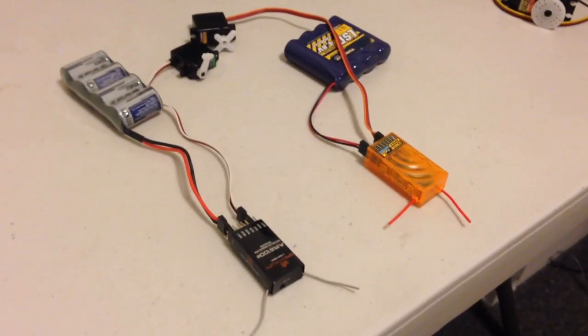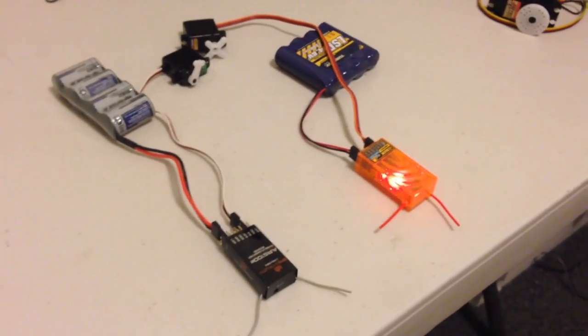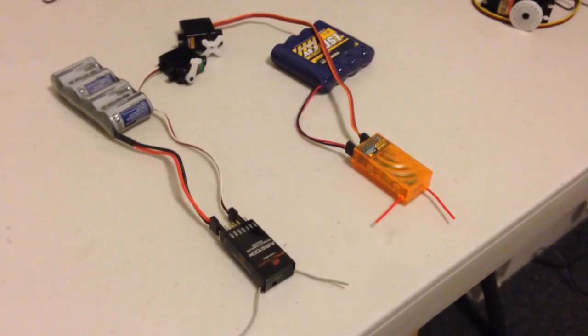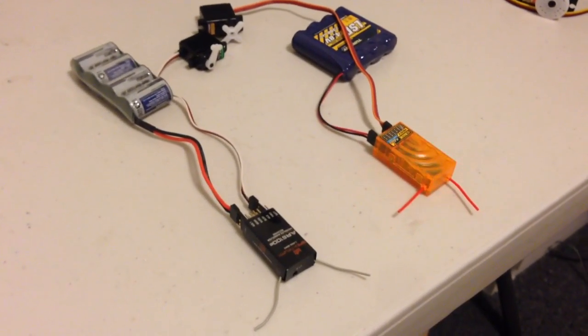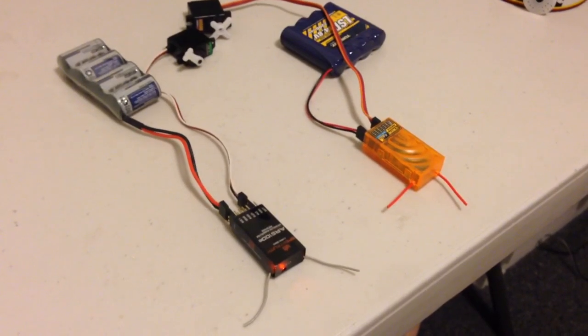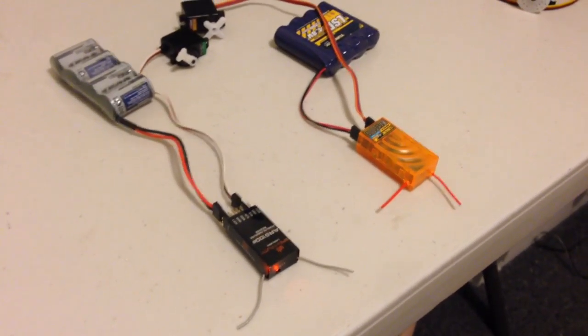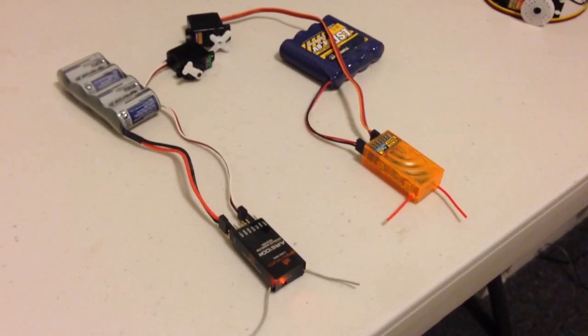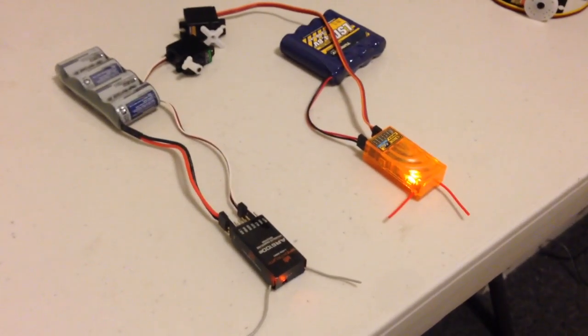And one last time. Turning on the transmitter now. Okay, so three times in a row the Spectrum receiver was faster.